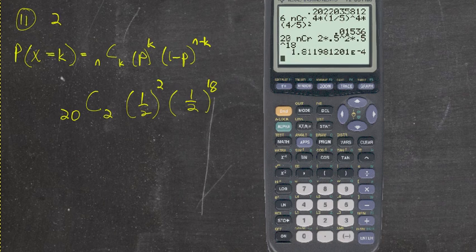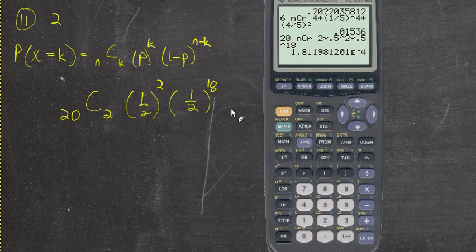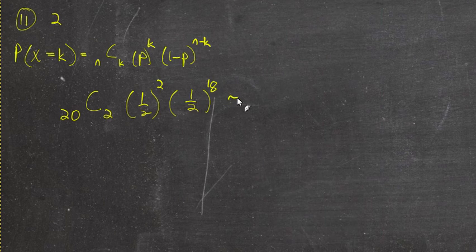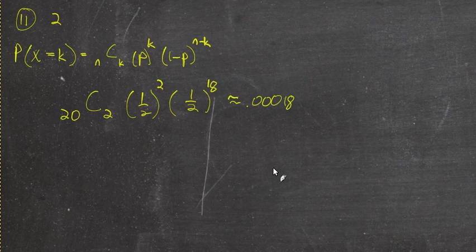The result is a very, very small probability. We move the decimal four places to the left: about 0.00018. That's just a little more than a hundredth of a percent — really not likely.